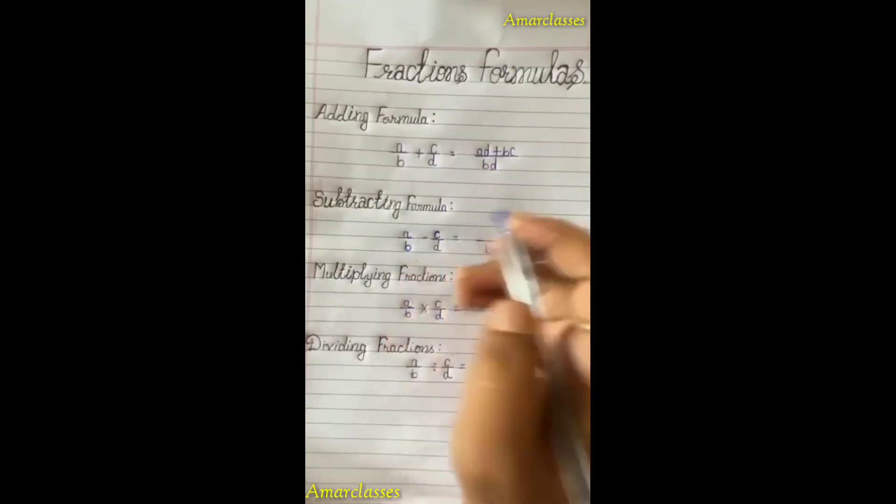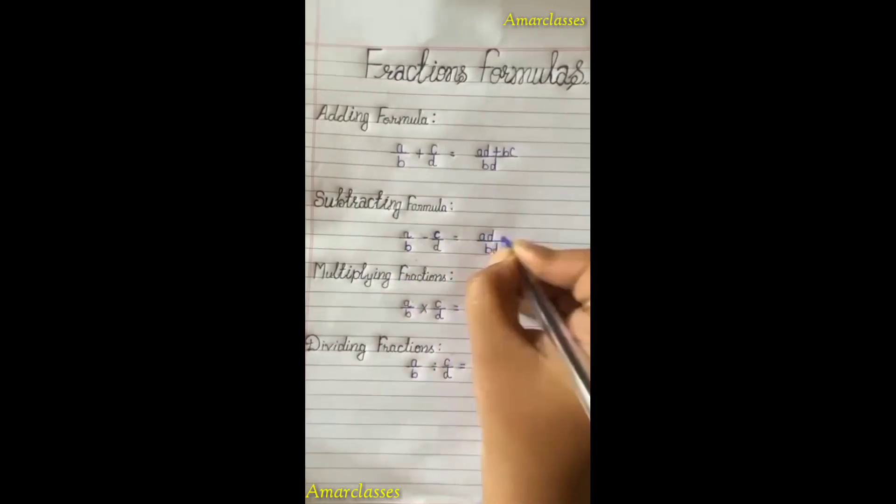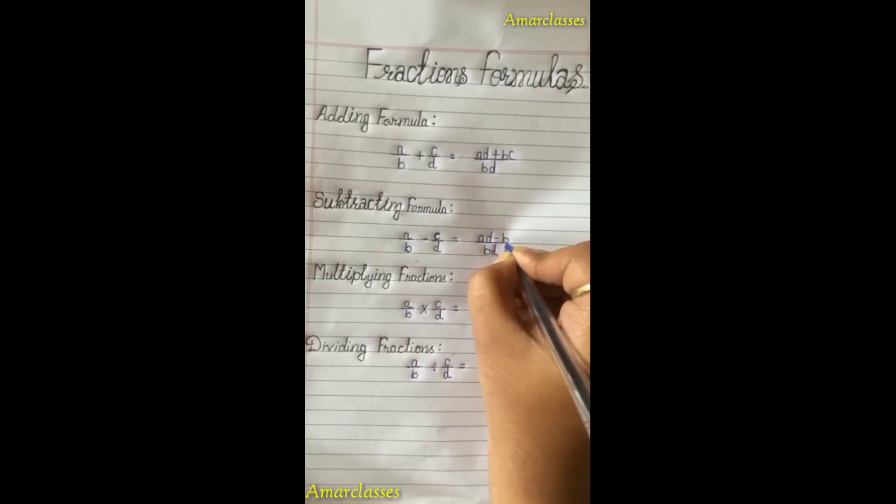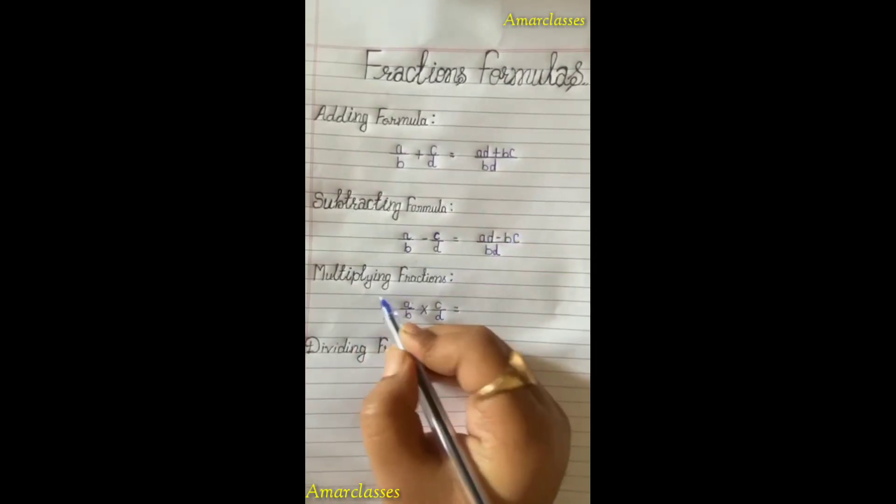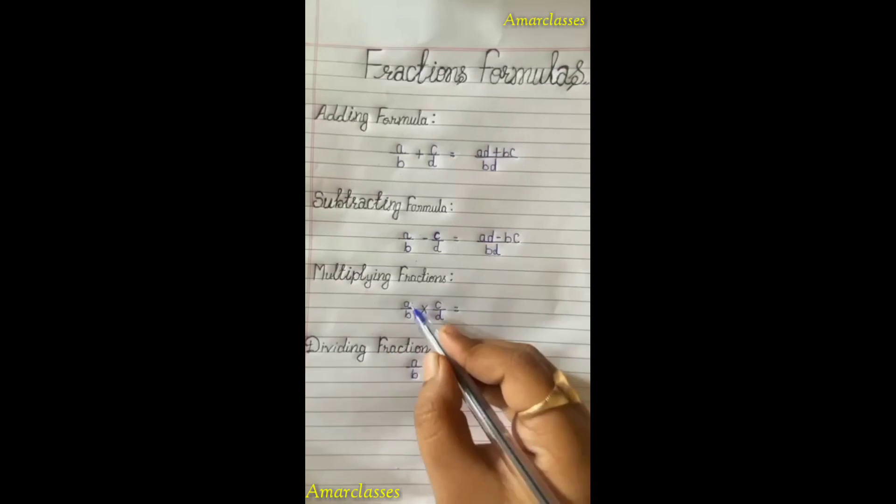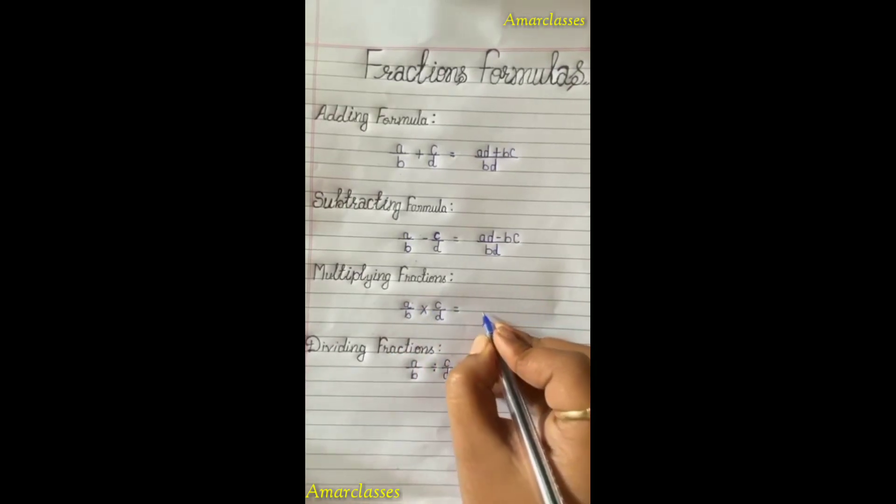Third one is multiplying fractions: a by b into c by d equals, in multiply we multiply numerator by numerator ac by bd.